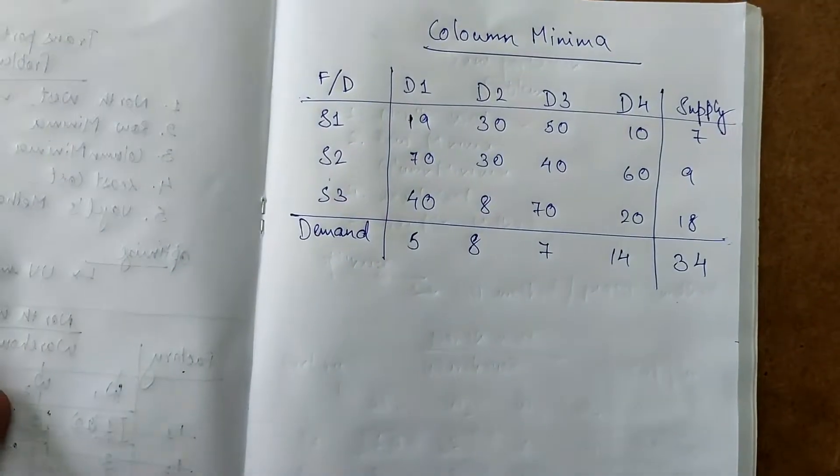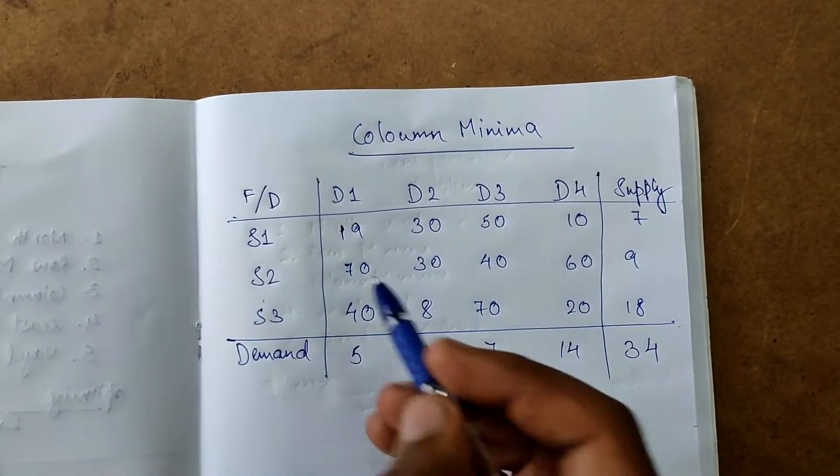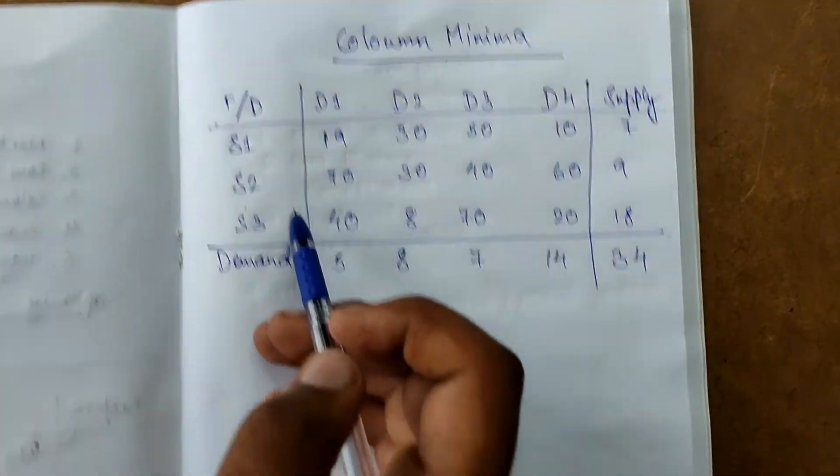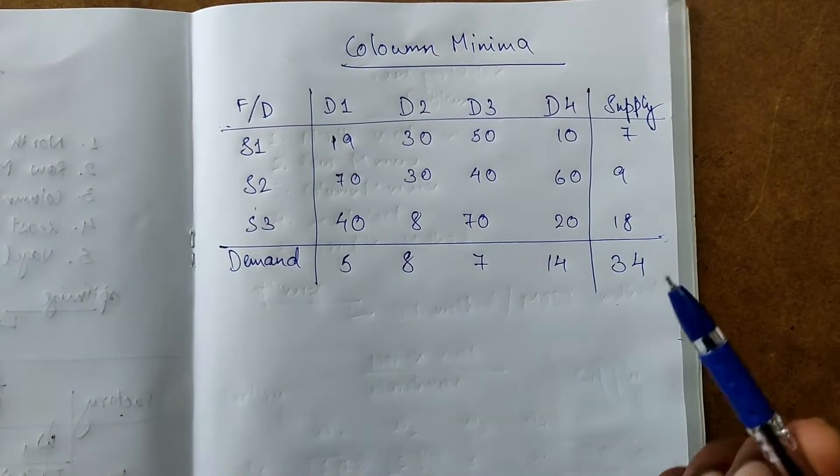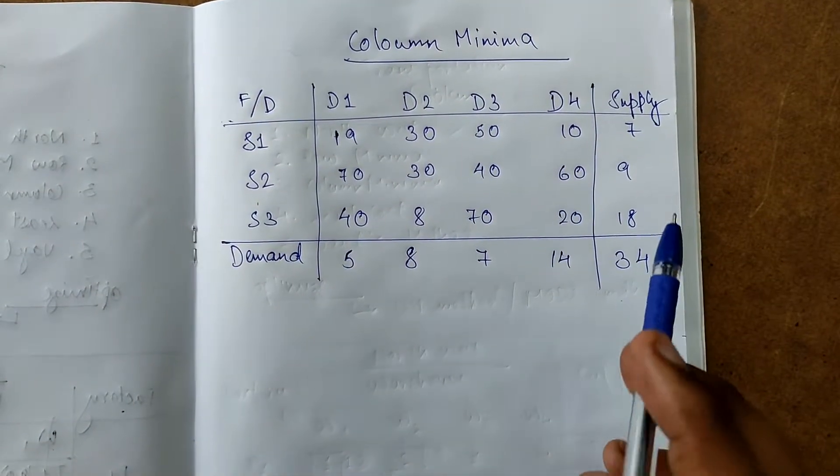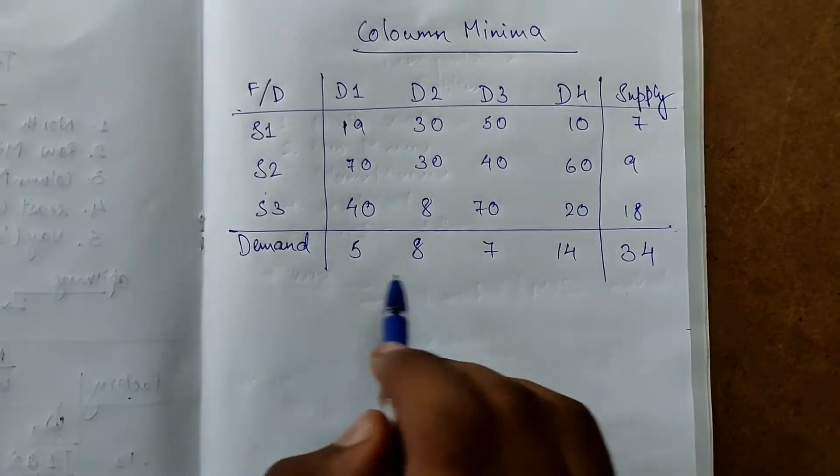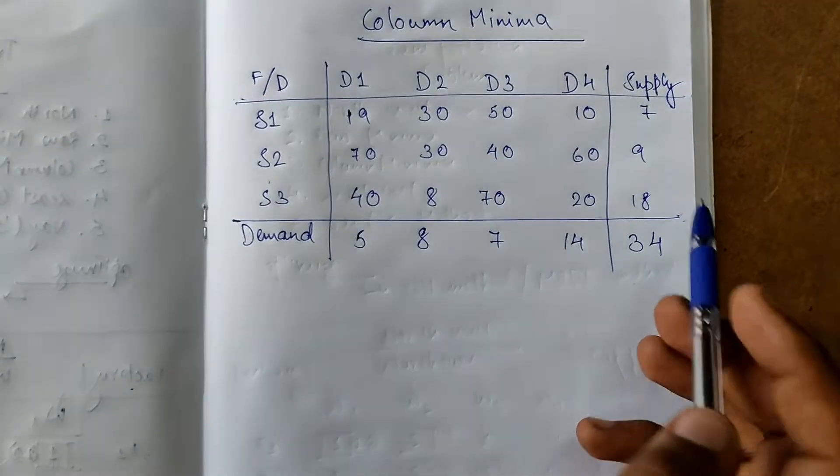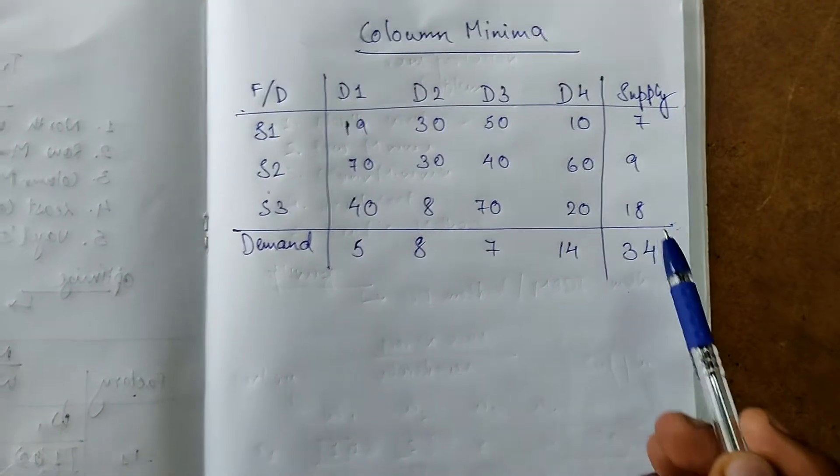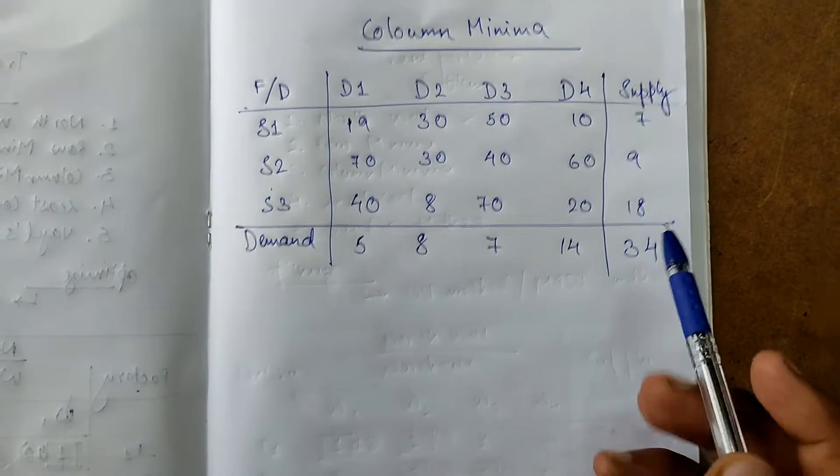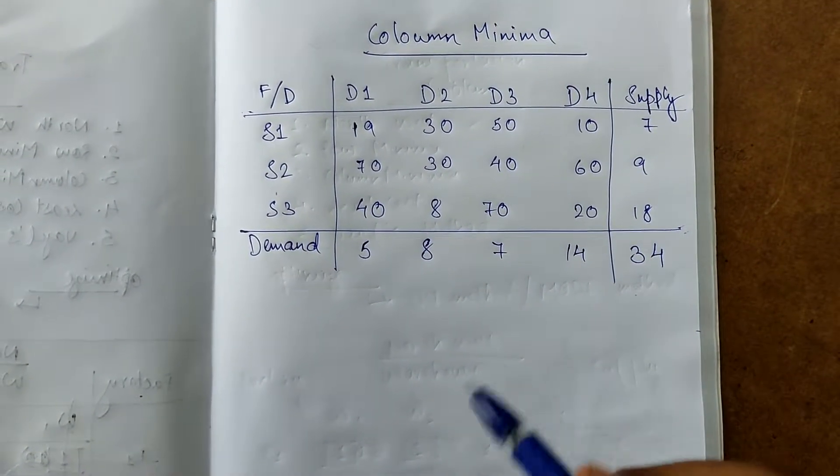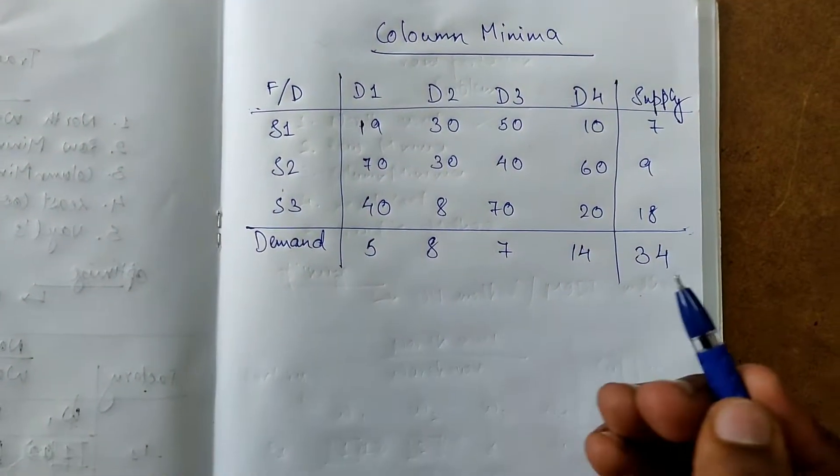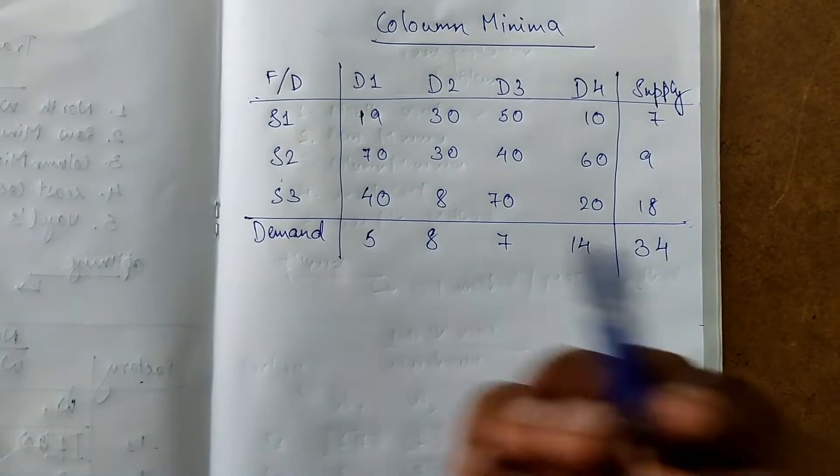Next is column minima. Column minima we will iterate column-wise. In this method we will first check demand must be equal to supply. Here 5 plus 8 plus 7 plus 14 equals 34 and 7 plus 9 plus 18 is also equal to 34, so it is balanced.